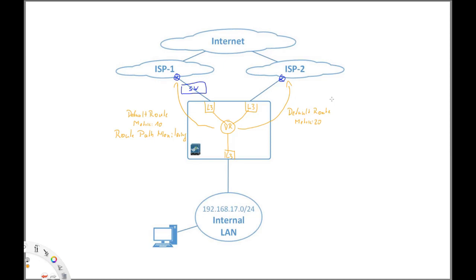If we want a more complex use case — like actually using both ISPs at the same time, sending some traffic out ISP1 and some out ISP2 to effectively utilize all resources — we need a bigger gun, which is policy-based routing.